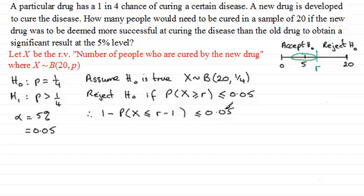And so if I rearrange this by subtracting 0.05 from both sides and adding this probability to both sides, I therefore end up with 1 minus 0.05 is 0.95. And this has got to be less than or equal to the probability of x being less than or equal to r minus 1. And let's just turn this round. Let's say that this is exactly the same then as the probability of x being less than or equal to r minus 1 is being greater than or equal to 0.95.